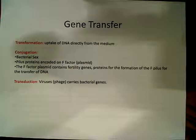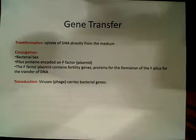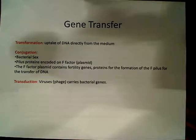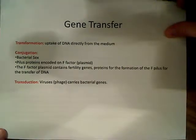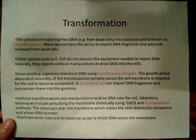The third type is transduction, which involves bacteriophages — viruses that infect bacterial cells. Some of these phages can actually get confused, so to speak, and pick up bacterial genes instead of transferring their own viral DNA. So instead of transferring the viral DNA, they transfer actual bacterial genes. Those are the three types I'm going to talk about in depth, and I'm going to start with transformation in this video.